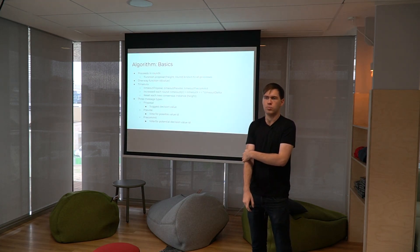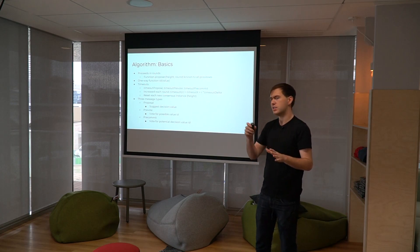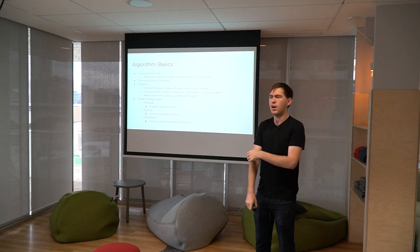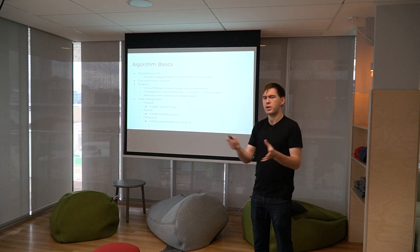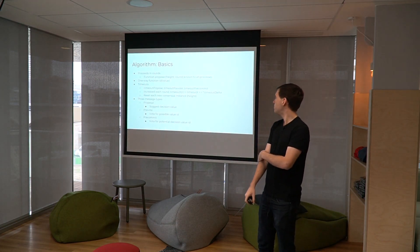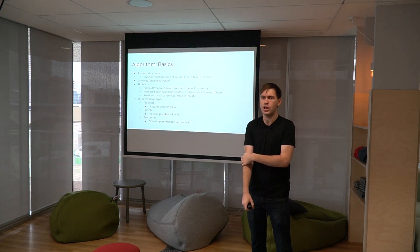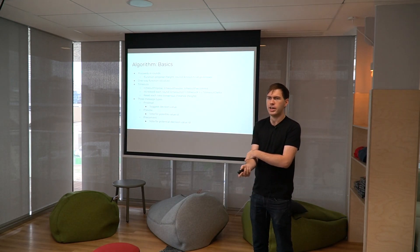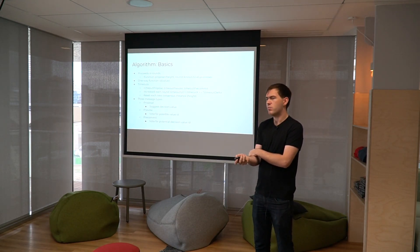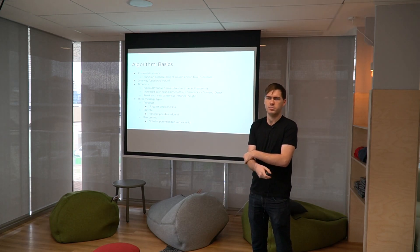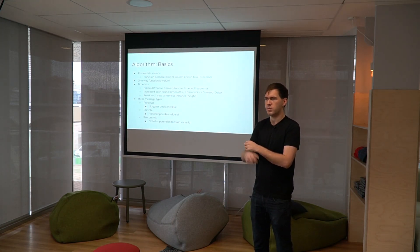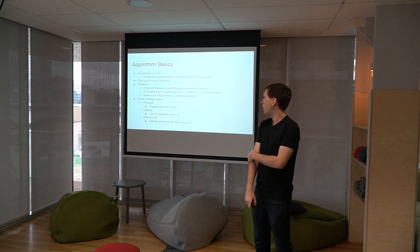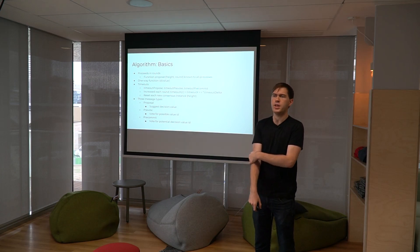The basics of Tendermint are round-based. We use the word 'round' slightly differently than in some of the literature: a round in Tendermint is just a set period of time with a particular proposer where all nodes are trying to come to agreement on a new value. All nodes have to know a function called proposer, which maps height — the consensus instance, or the height of the block we're coming to consensus on — and a round number to a proposer. In Tendermint this is deterministic: we basically cycle through all proposers. We also assume a one-way hash function which takes a value and maps it to an identifier with no collisions.